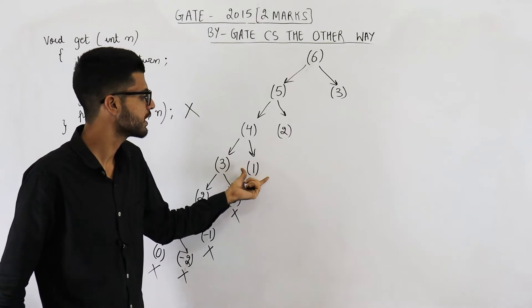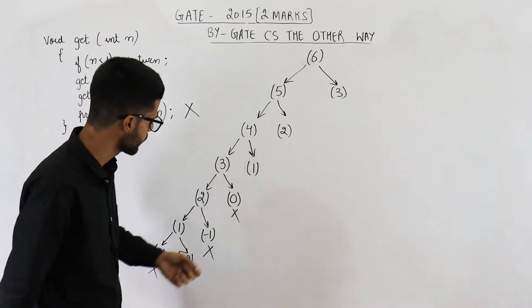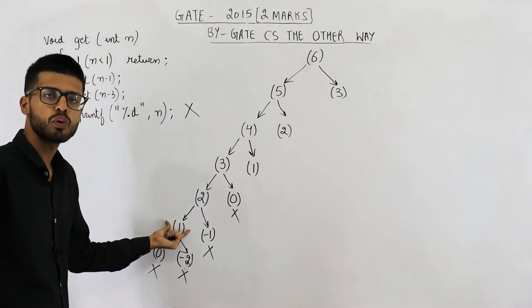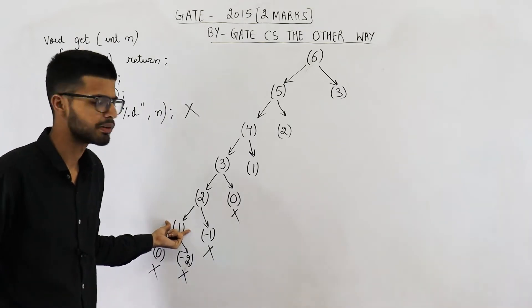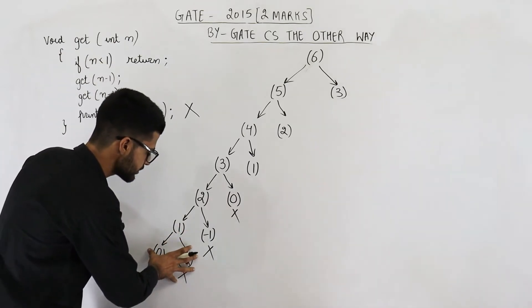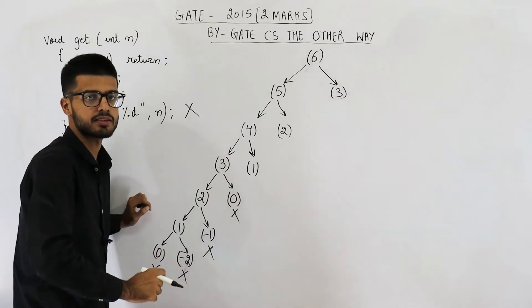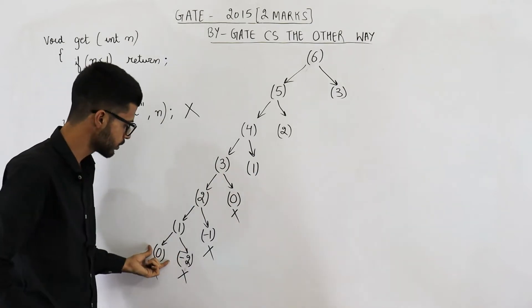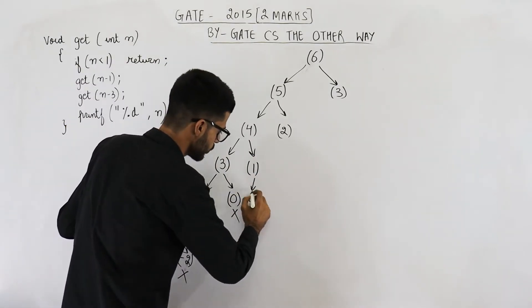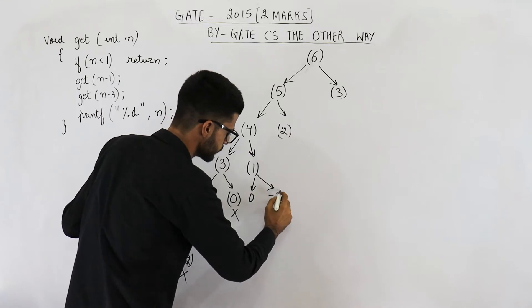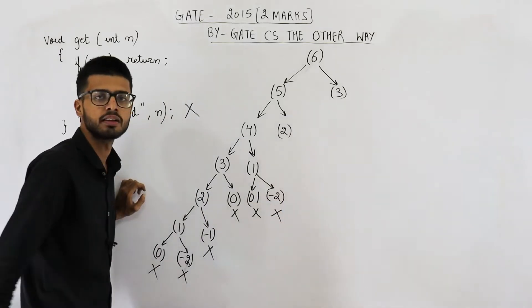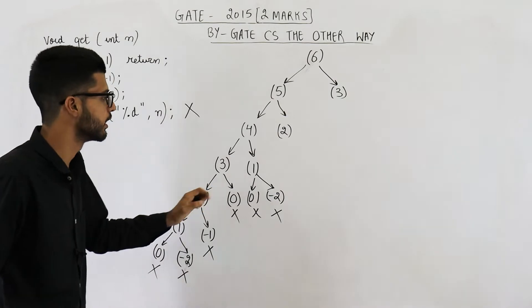We have already seen what happens if you call this function with 1 as parameter. So this entire subtree can be copied as it is here — it produces get(0) and get(minus 2). Both of these functions will end immediately.